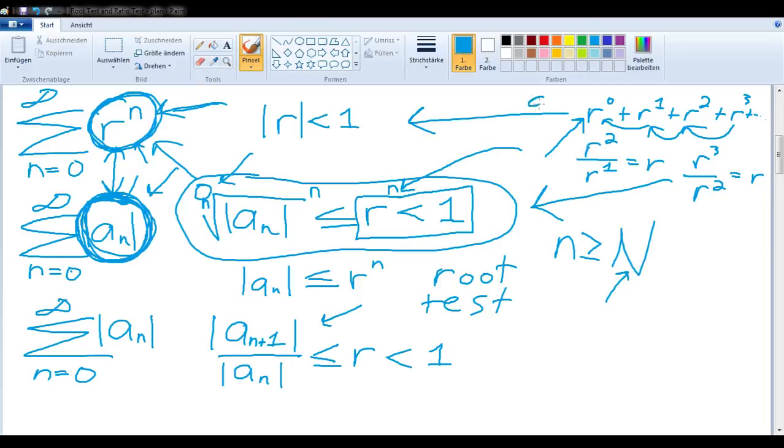Sometimes you might see it written as a q, which just stands for quotient, which is just basically another word for ratio. So if you think about it that way, the geometric series has to do with ratios, and this is just the ratio test.